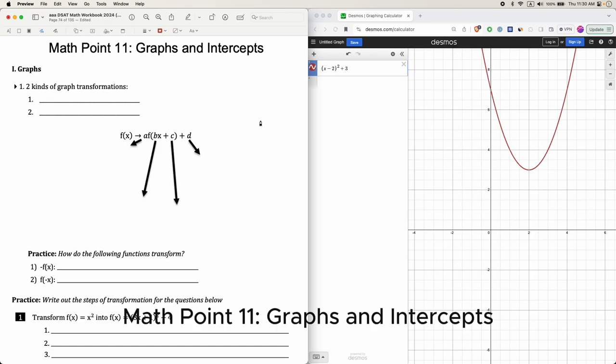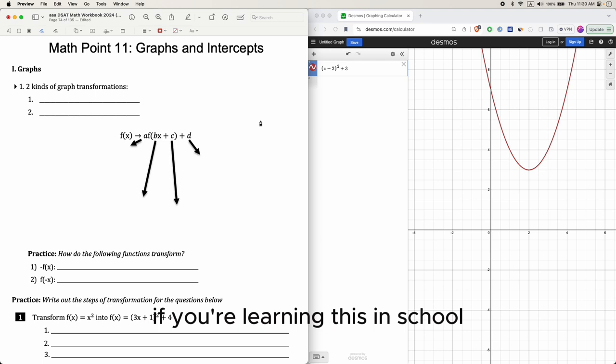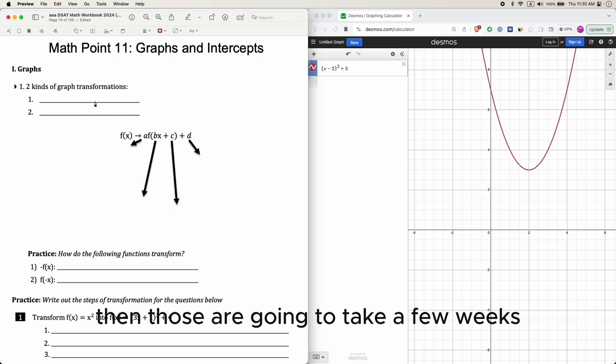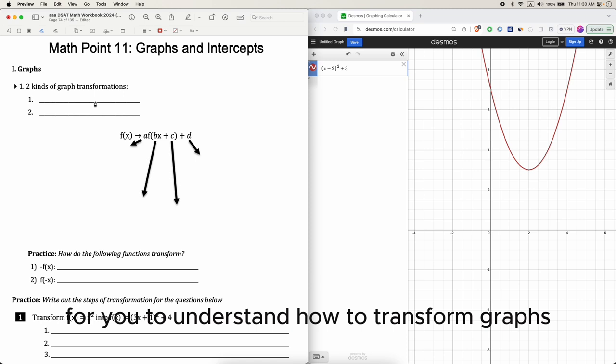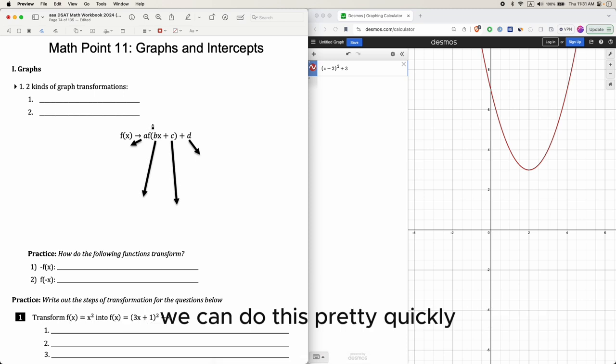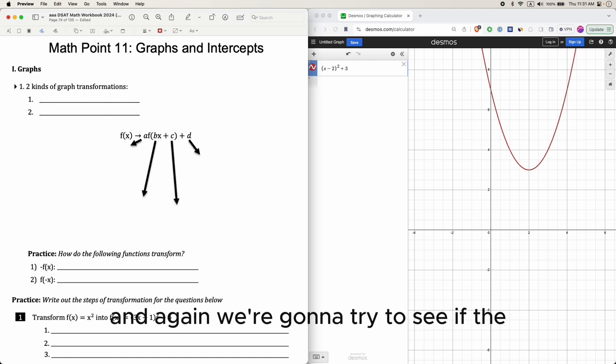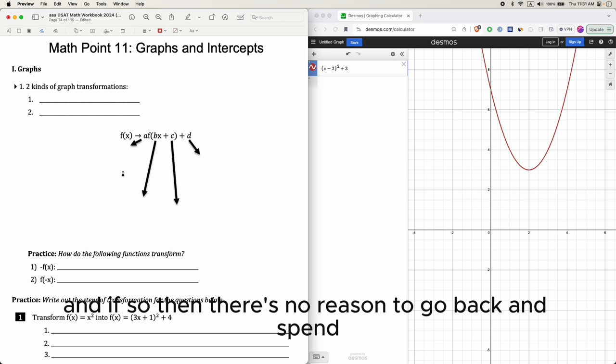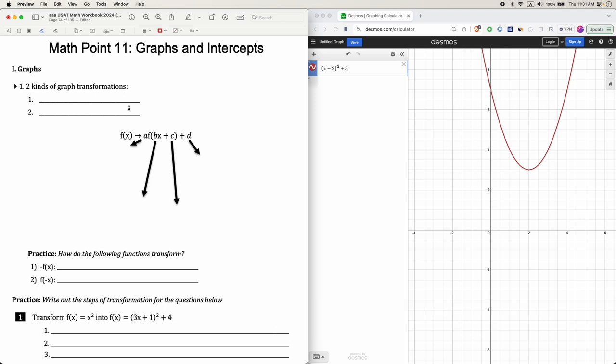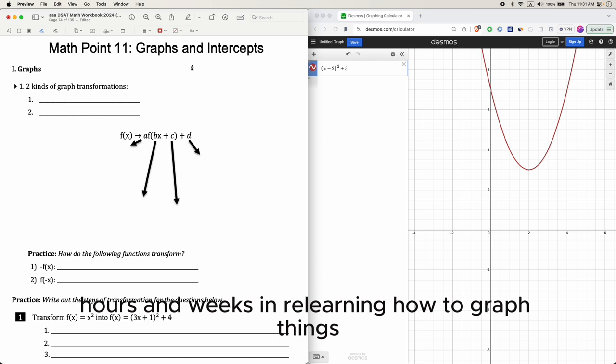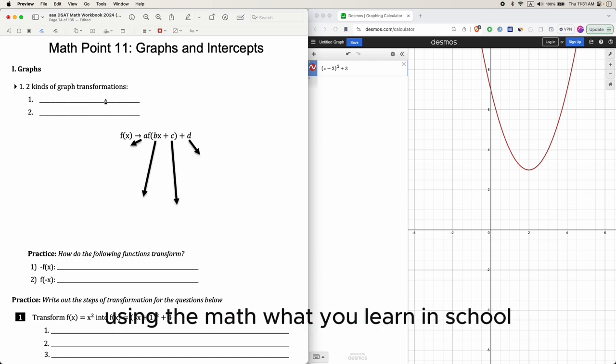Math point 11, graphs and intercepts. If you're learning this in school about graphs and intercepts and about transformations, then those are going to take a few weeks, perhaps a few months for you to understand how to transform graphs. But since we're doing this for the SAT, we can do this pretty quickly, and we won't go into the details on the notes that we originally want you to go over. We're going to try to see if using the Desmos calculator is the fastest way to do this.